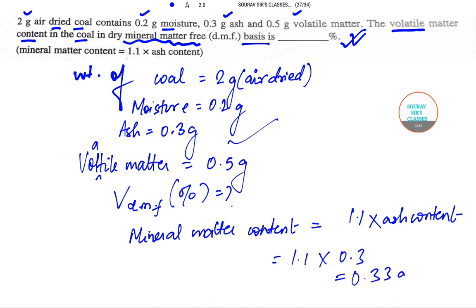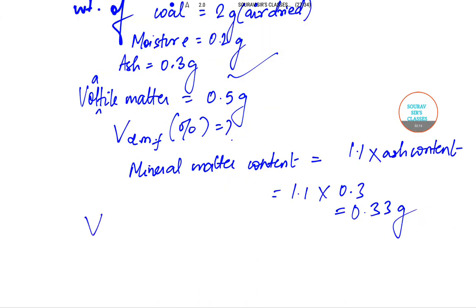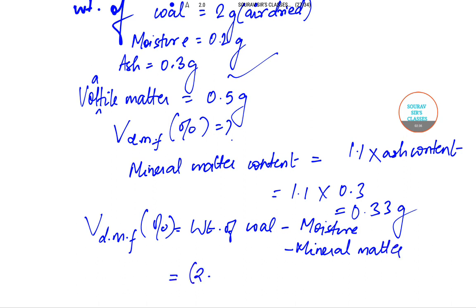Next, the volatile matter becomes weight of coal less moisture less mineral matter. So this is equal to 2 minus 0.2 minus 0.33, so this equals 1.47.